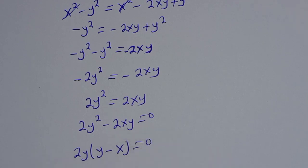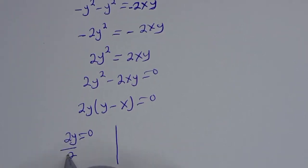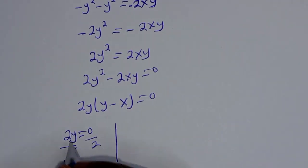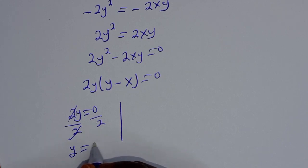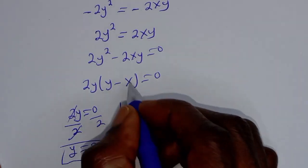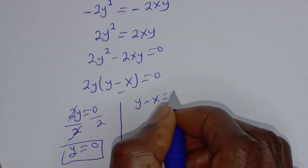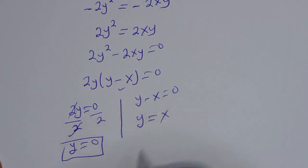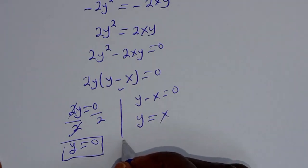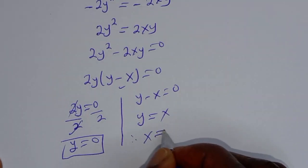Factoring, 2y is common, so 2y(y minus x) equals 0. There are two cases: the first case is 2y equals 0, which gives y equals 0. The second case is y minus x equals 0, so y equals x. But since y equals 0, therefore x equals 0.